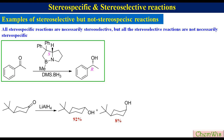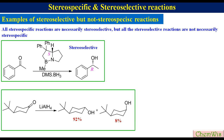Reduction of 4-tert-butylcyclohexanone with lithium aluminum hydride gives a mixture of trans and cis alcohol with trans being 92% and cis 8%. Out of two possible enantiomers, only the R enantiomer is formed in the first example, so it is stereoselective. In the second example, out of two possible diastereomers, trans is formed as the major product, so this is also stereoselective.